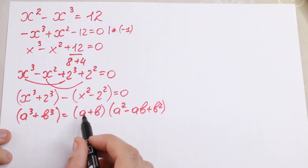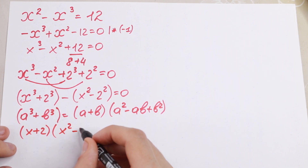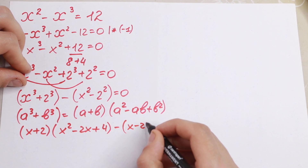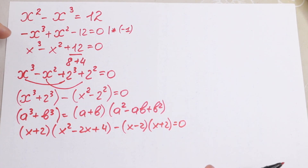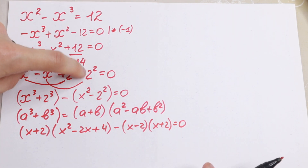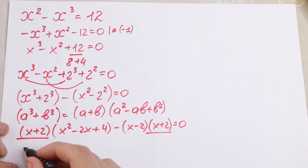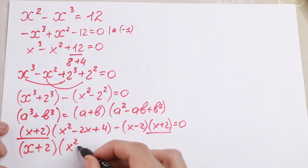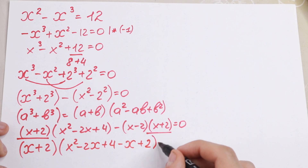Applying the sum of cubes formula gives us (x + 2)(x² − 2x + 4), and applying the difference of squares formula gives us minus (x − 2)(x + 2) equal to zero. Notice that (x + 2) appears in both terms, so we can factor it out: (x + 2) times [(x² − 2x + 4) minus (x − 2)] equal to zero.